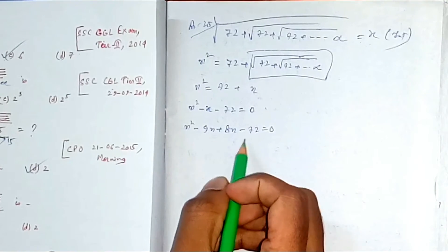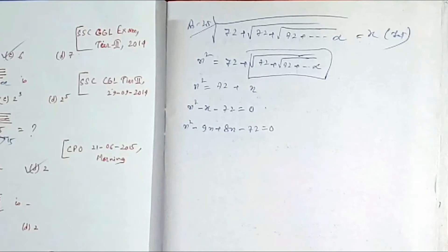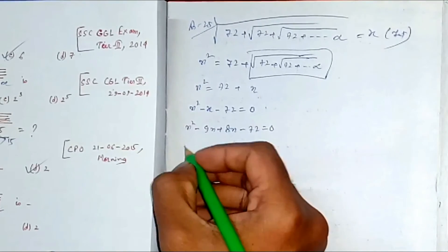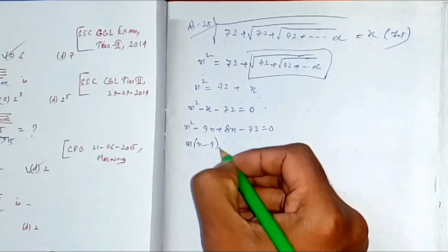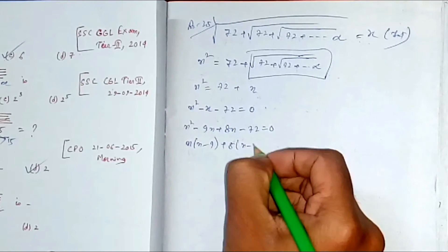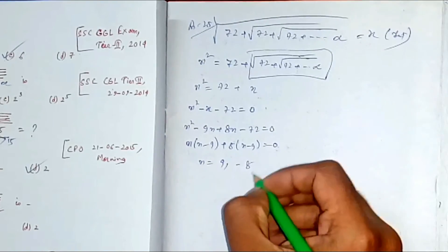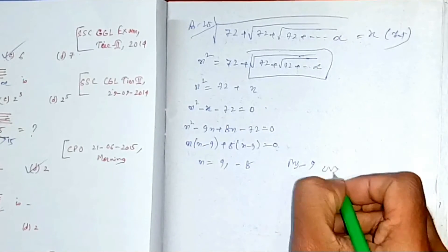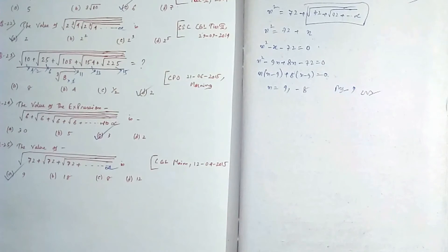If you have difficulty with middle term factorization, you can use Sridharacharya's formula, which I've discussed in previous videos. Factoring: x(x-9) + 8(x-9) = 0, so (x+8)(x-9) = 0, giving x = 9 or x = -8. We neglect -8, so the answer is 9, which is option A.